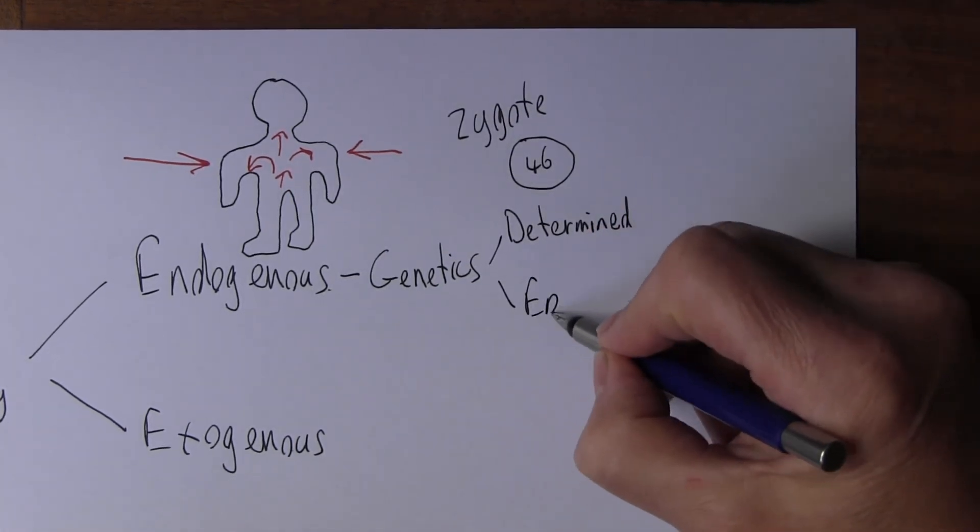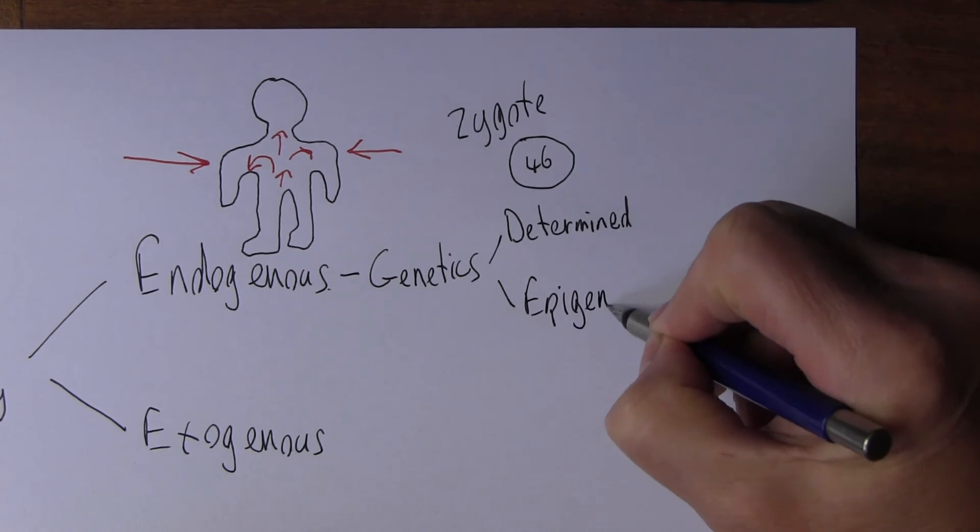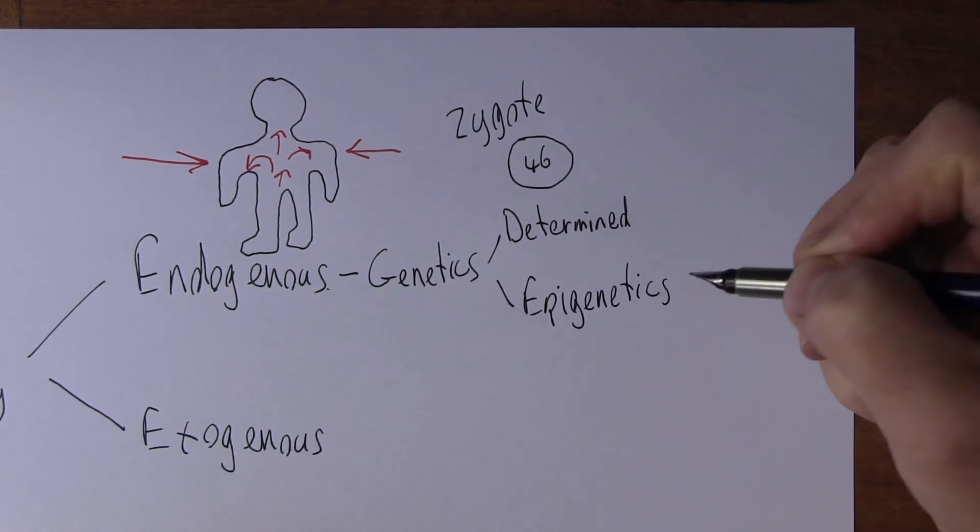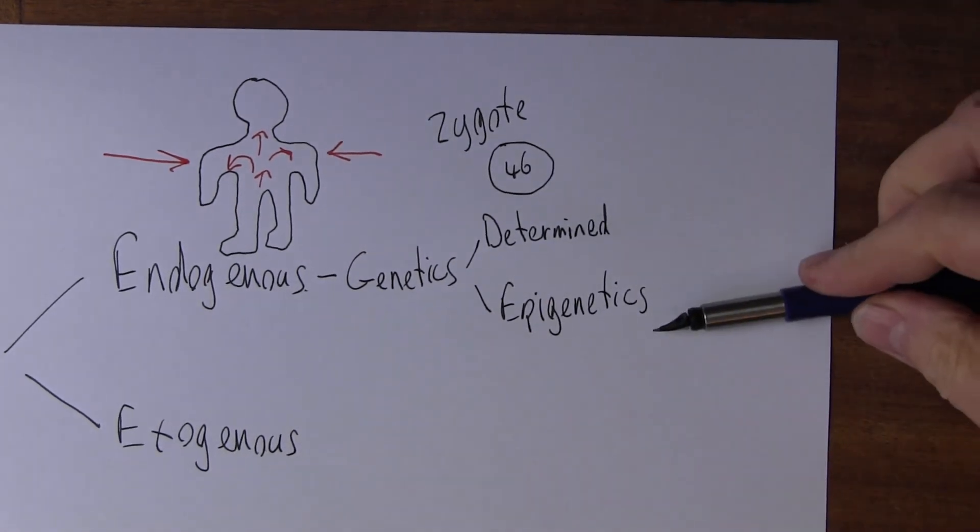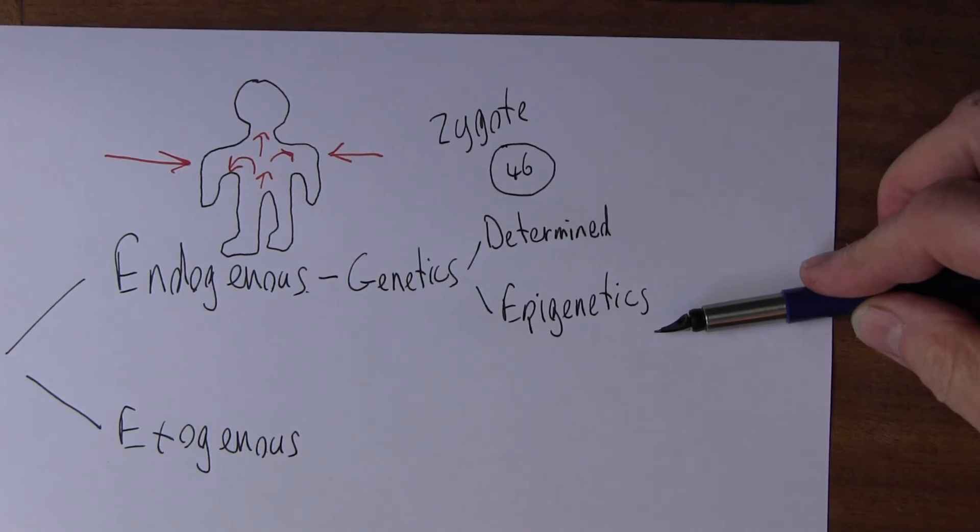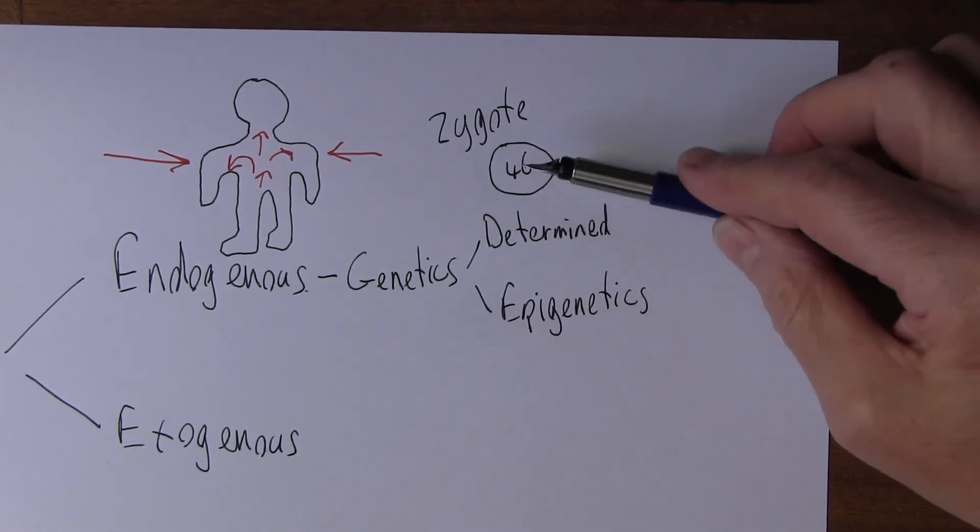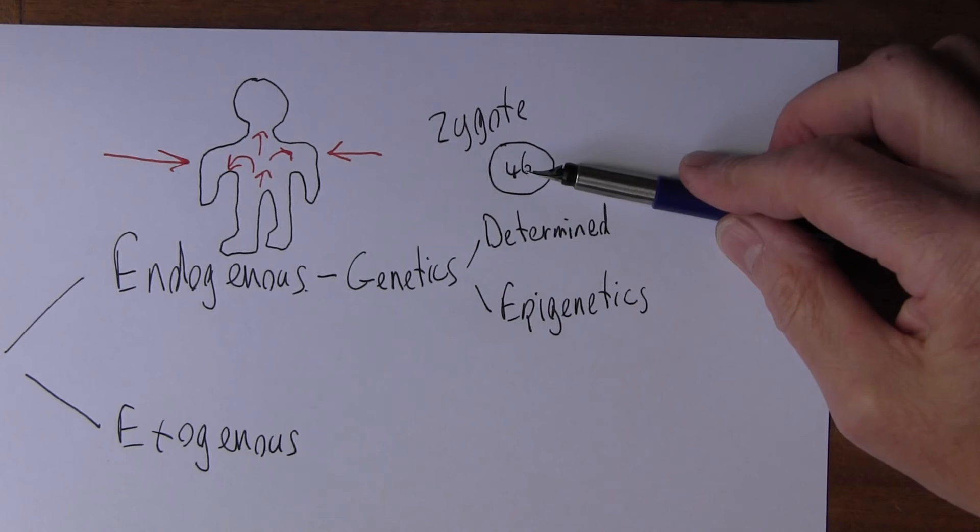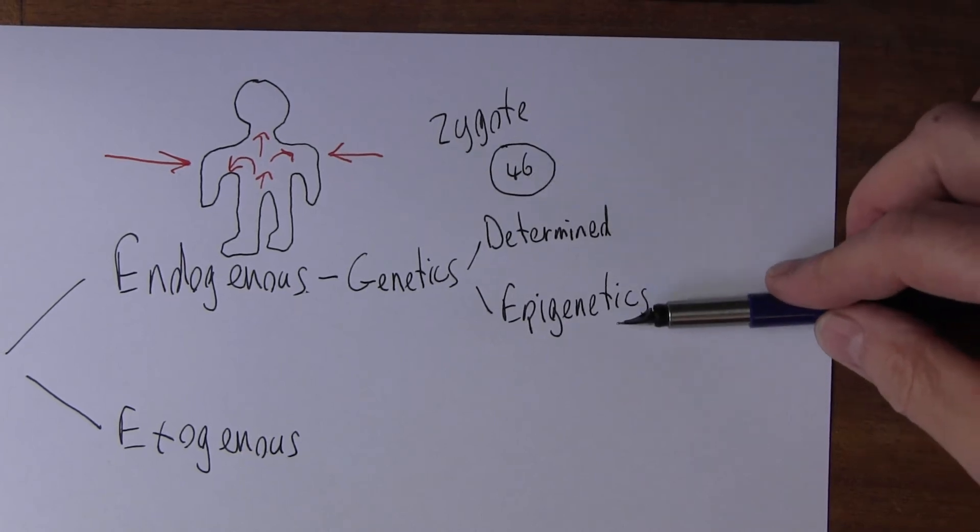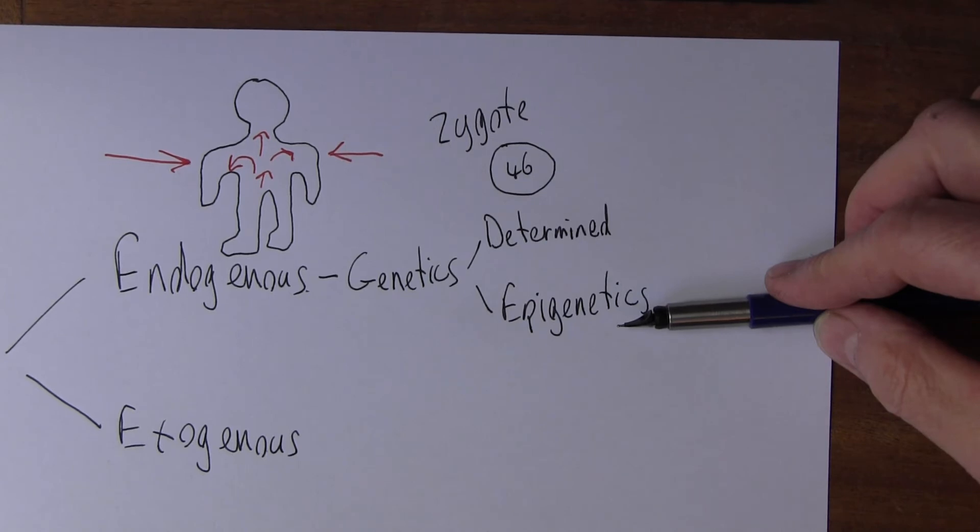But we now know that there's epigenetics. Now epigenetics is the way that environmental factors can influence gene expression. So it's quite possible to have two identical twins who were monozygotic, they have the same genetic material when they're a zygote, but the way their genes are expressed are influenced epigenetically.